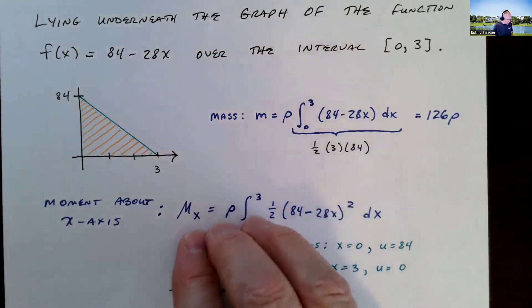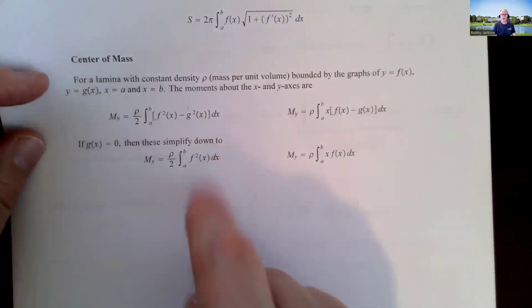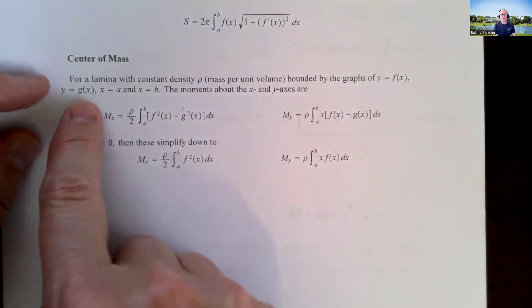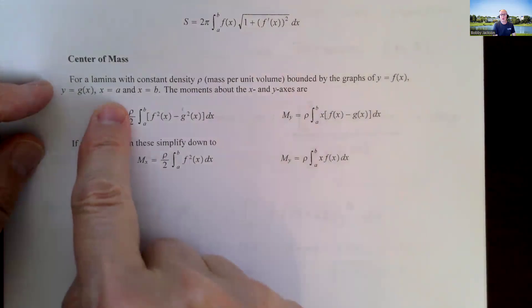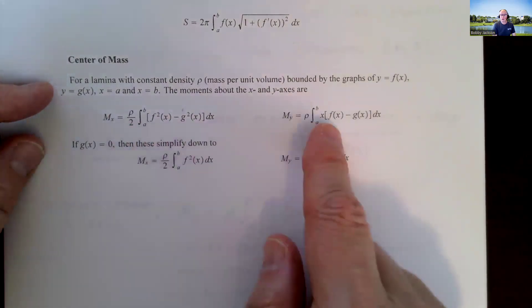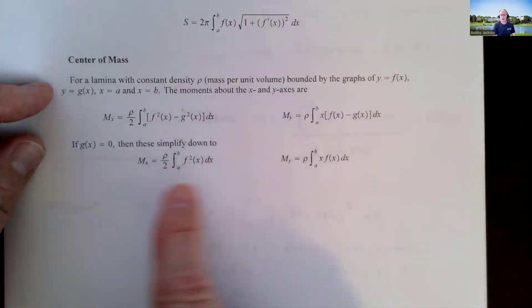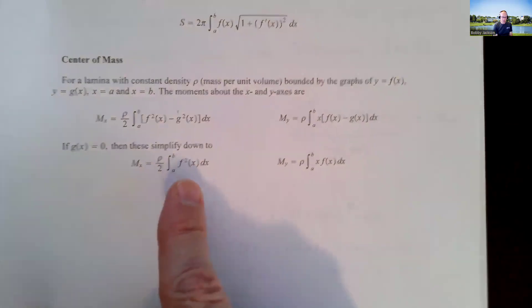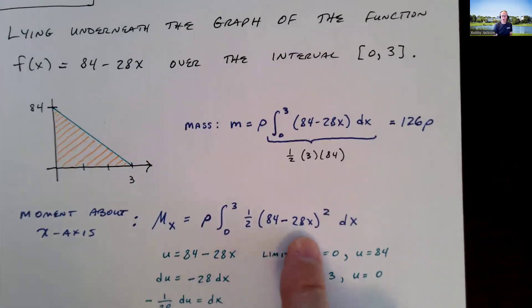What about the moment about the x-axis? We have these formulas for a lamina with constant density rho, bounded by top function f(x) and bottom function g(x). We're considering regions that are vertically simple between the vertical lines x equals a and x equals b. In our case, the g(x), the bottom function, is 0. Here's the moment about the x-axis. It's basically half rho and then integrating the function squared. So I'm going to do one half the function, which is 84 minus 28x squared.